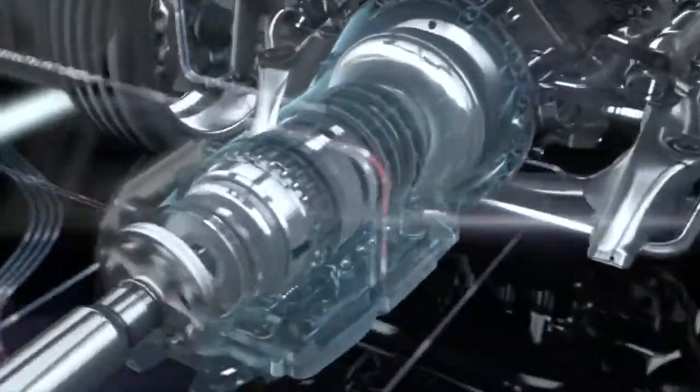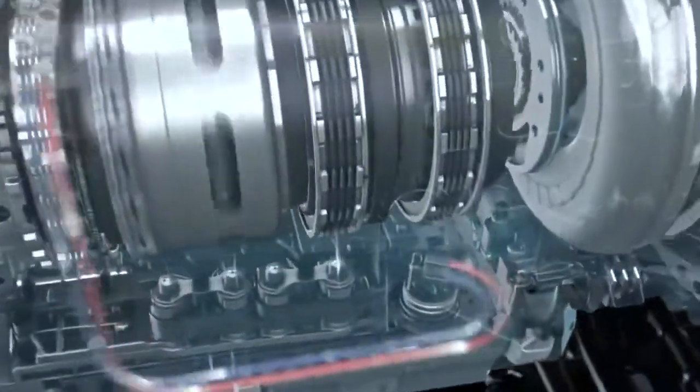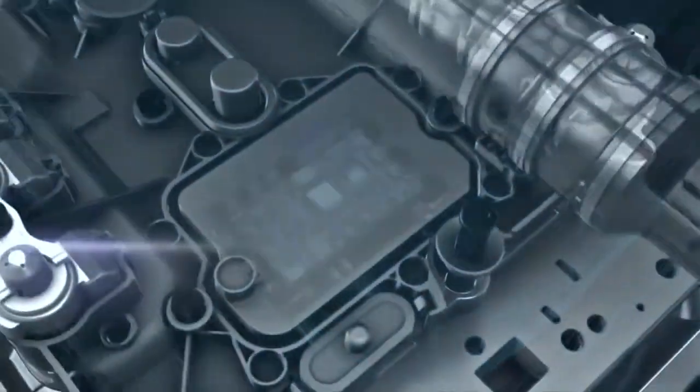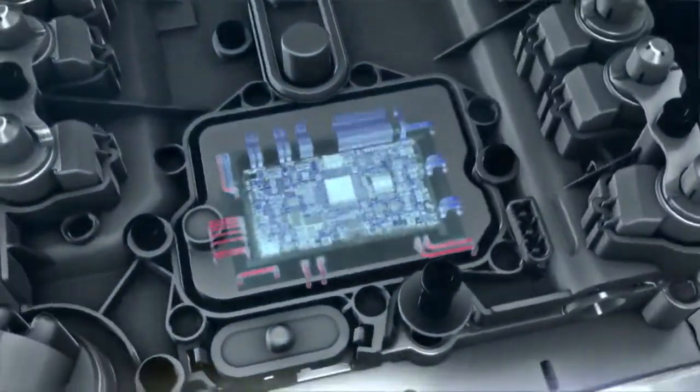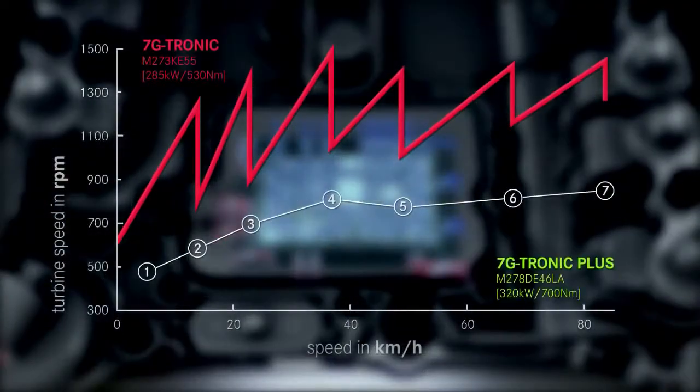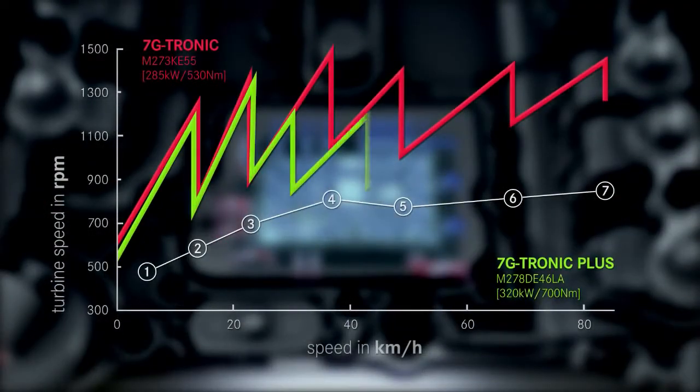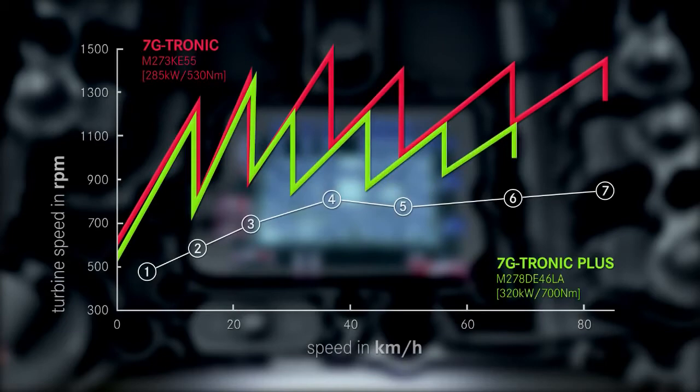The electro-hydraulic control unit was also fully reworked in order to obtain better shift dynamics. An eco-shift program takes full advantage of the good power delivery of modern engines in the low speed range and the improved damping due to the new converter.